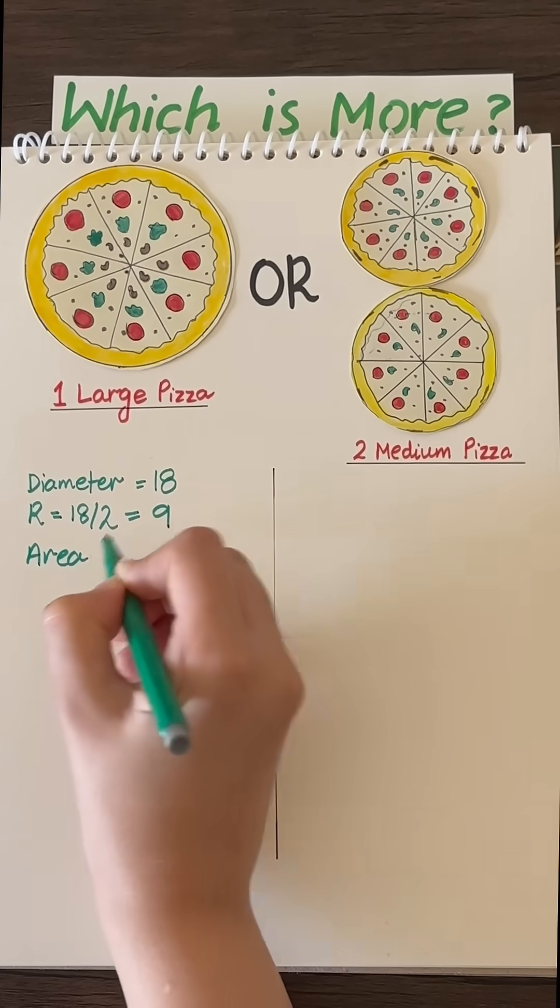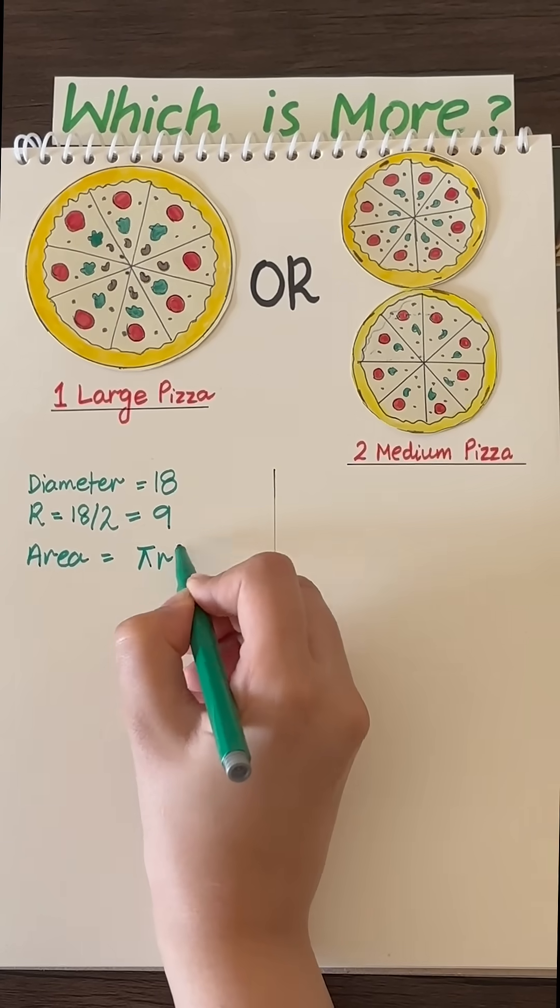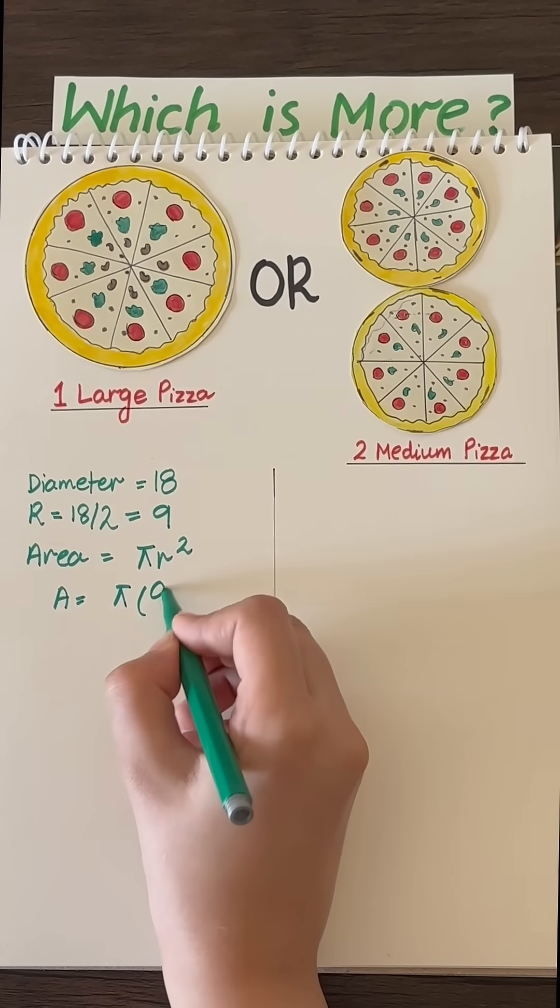Now we need to find the area of the pizza, which is given by the formula pi r squared. Here r is the radius, which is 9.